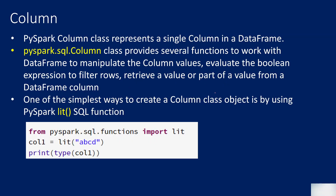PySpark's `pyspark.sql.Column` class provides several functions when you work with DataFrames. It represents a column in a DataFrame — similar to how the Row class represents a row. Once you take any column from a DataFrame, you can perform various operations on it: manipulate column values, evaluate expressions to boolean values for filtering rows, retrieve partial portions of values, and much more.